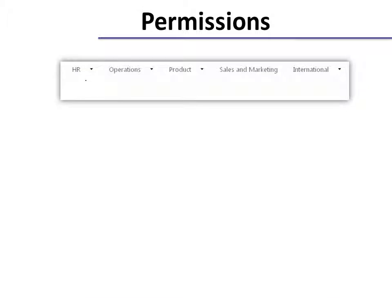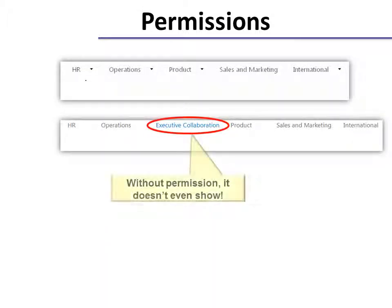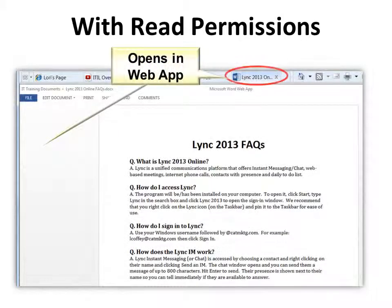Permissions don't even show if you don't have them. You can see there's a tab that doesn't show because I don't have permission to see it. If someone sends me a link and I have read permissions, then when I click the link it's going to open that document in a web app.